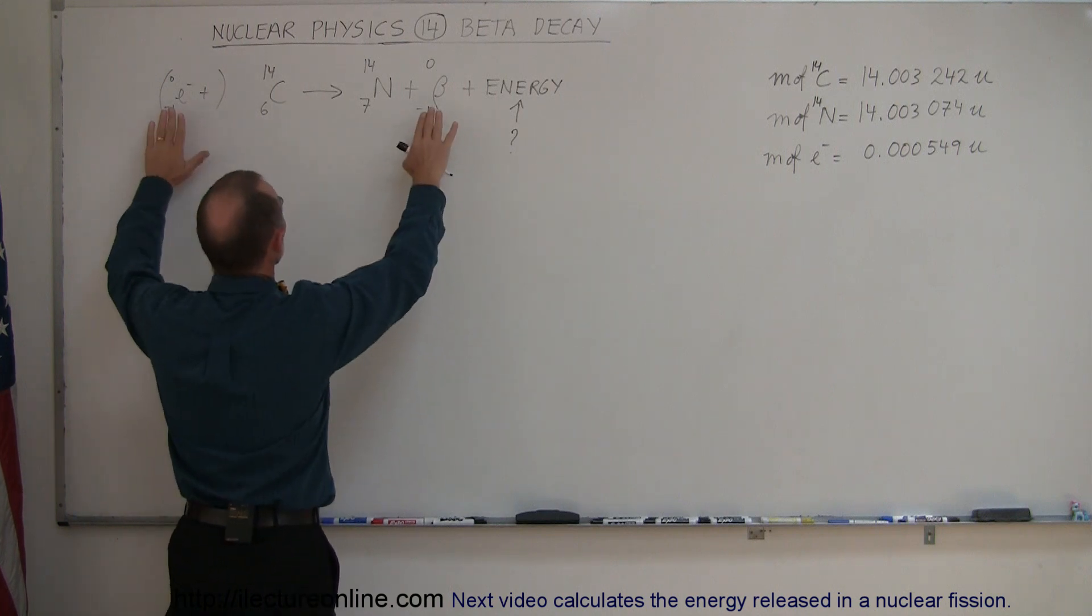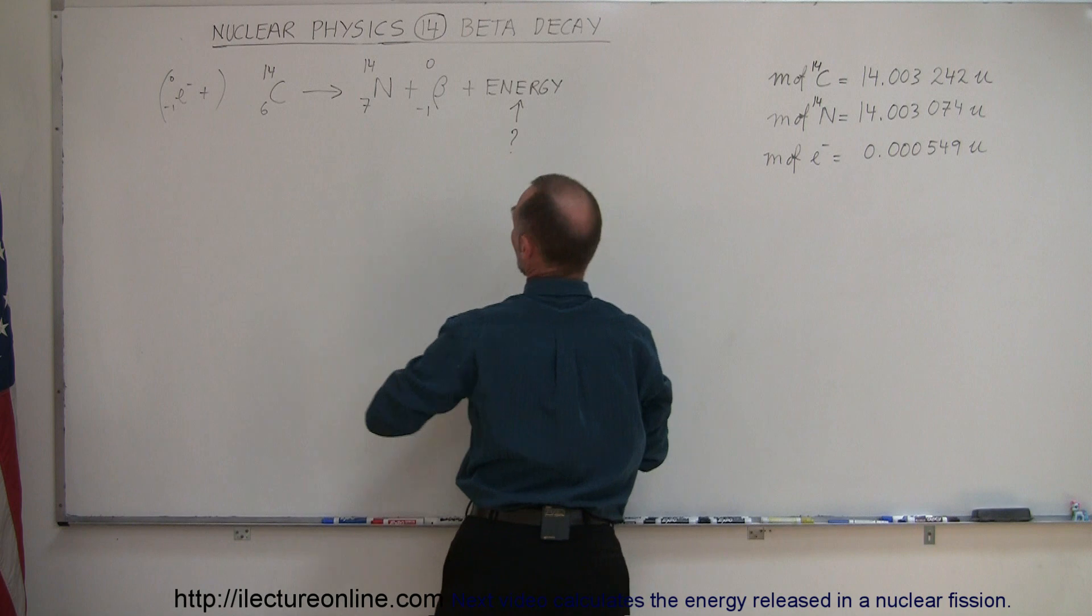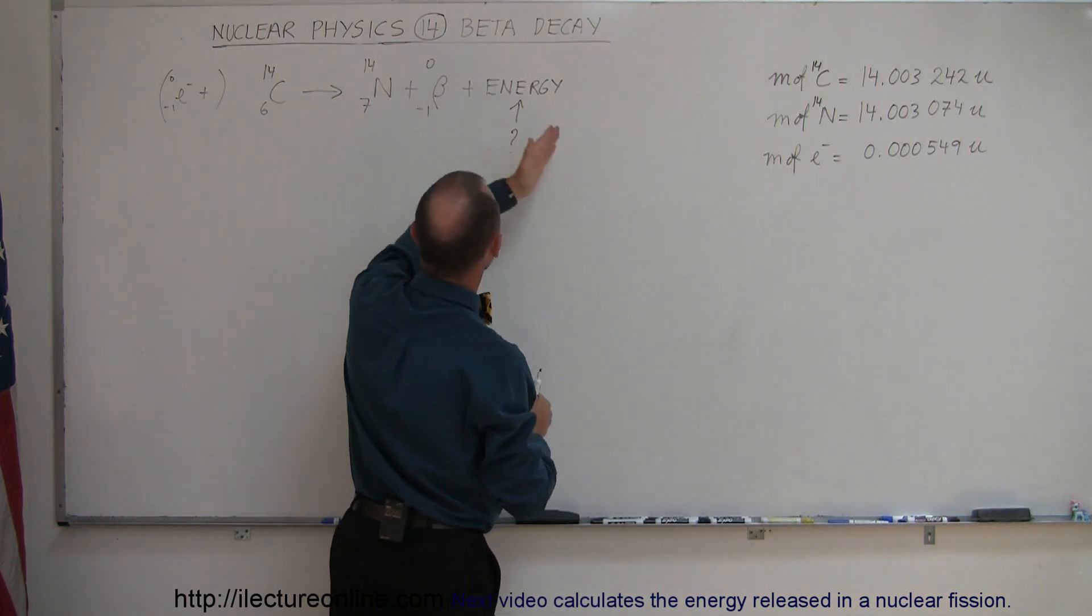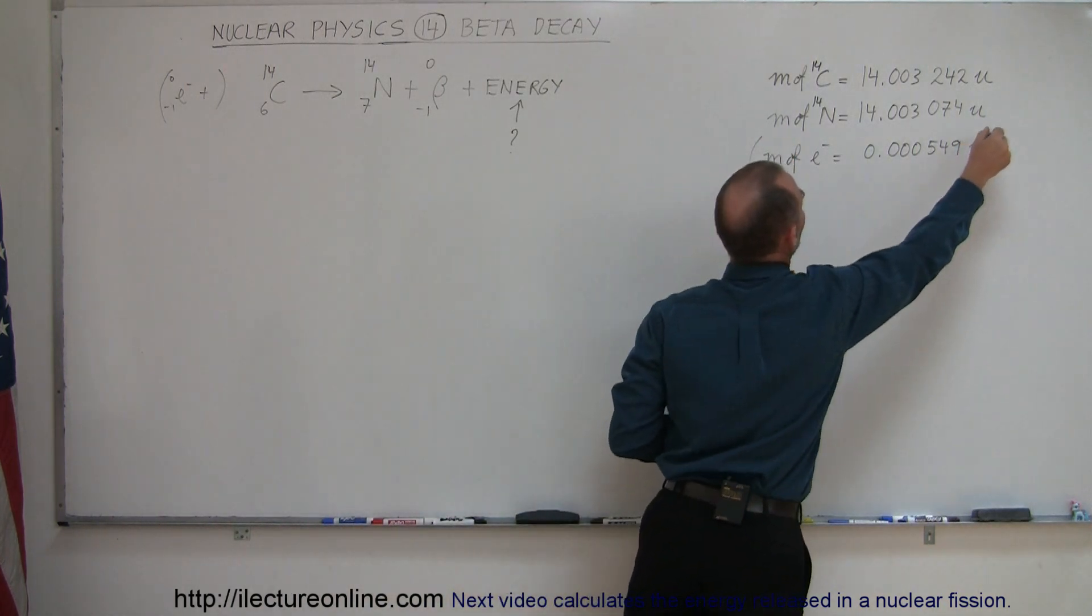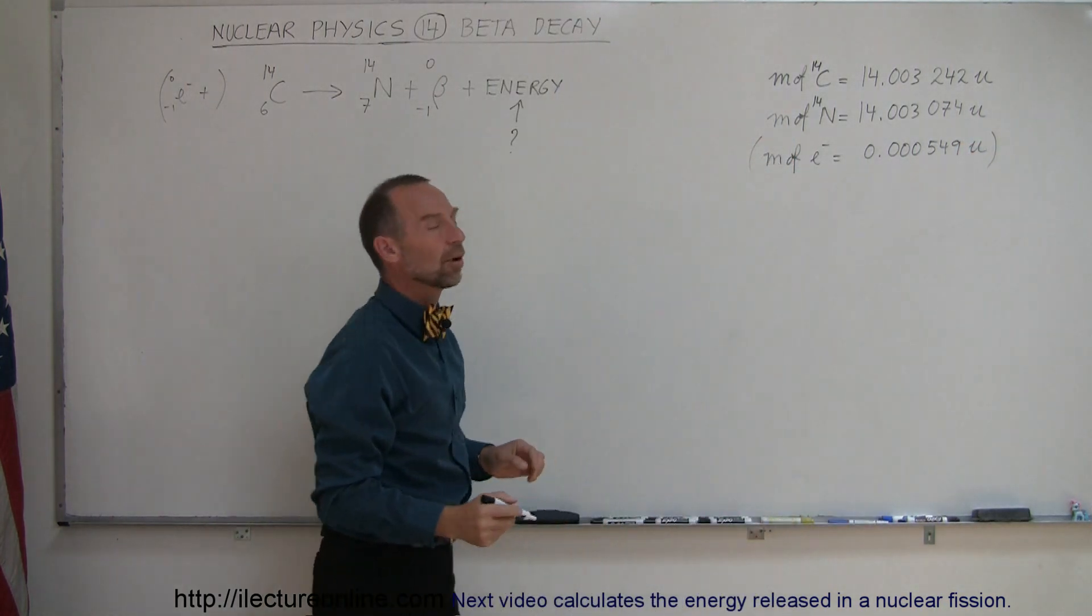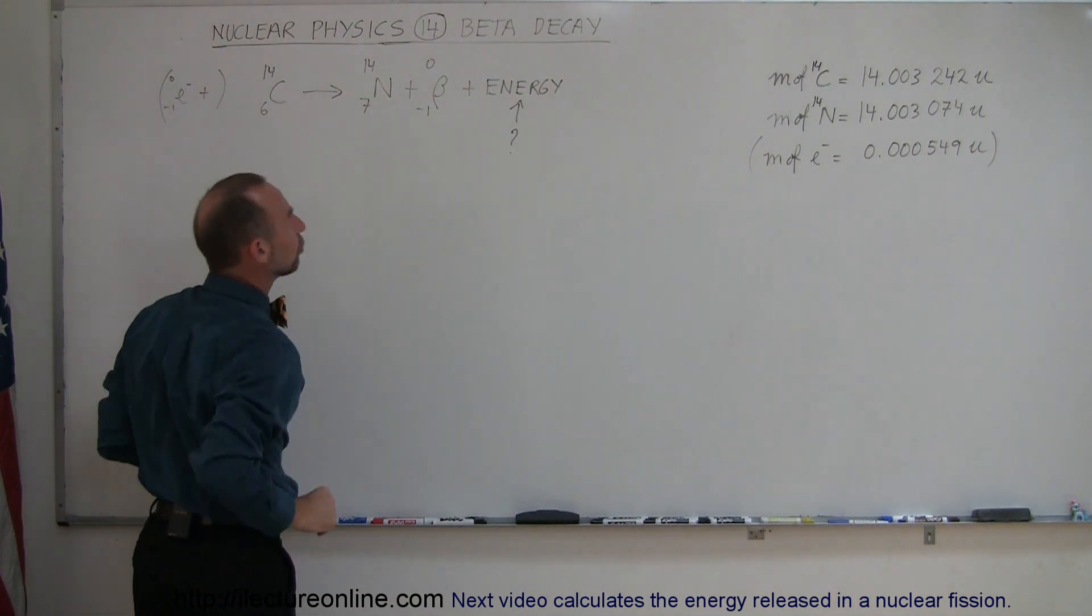So charge-wise we're taken care of, but the mass is included here of this extra electron even though the nucleus ejects an electron. So it turns out we do not have to worry about this added mass of the electron. We can simply ignore it and just take the mass differences between the two nuclei.